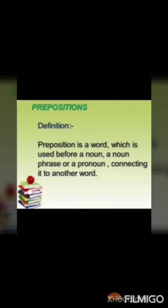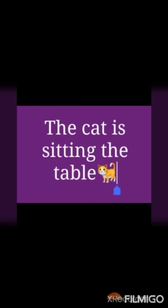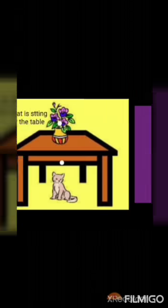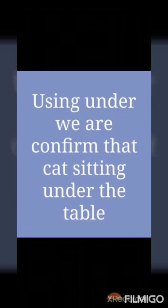Let's understand this with an example. The cat is sitting under the table. If we do not use 'under' and write the same sentence — 'The cat is sitting the table' — we are not able to understand what the relationship is between the sitting of the cat and the table. Using 'under,' we are confirmed that the cat is sitting under the table.